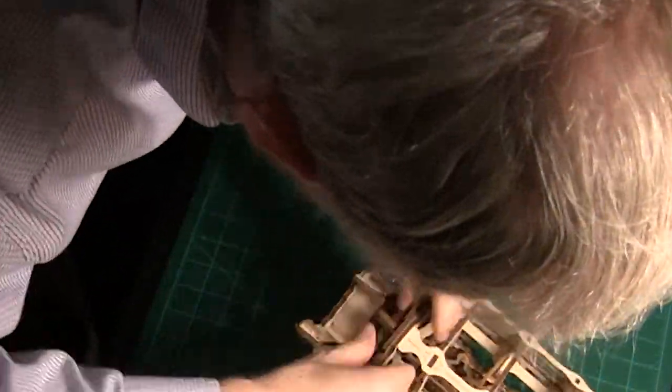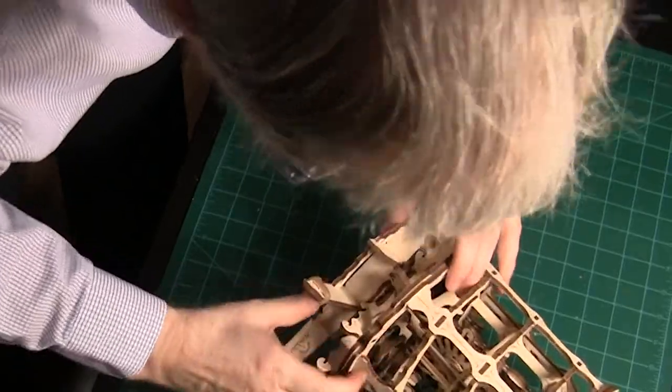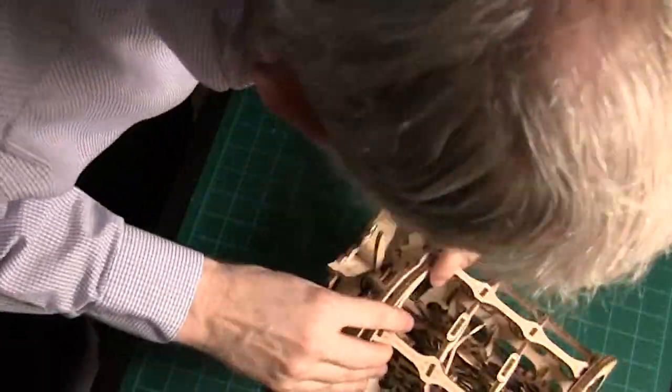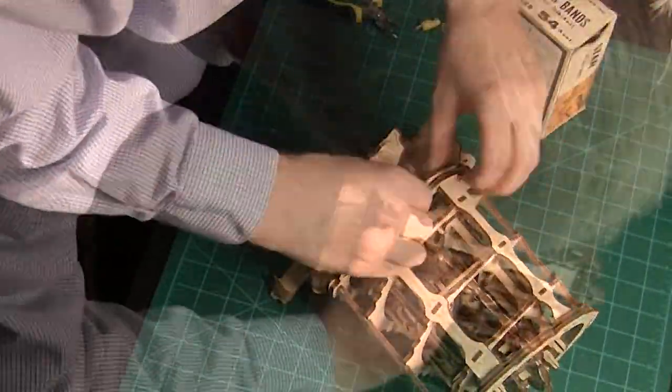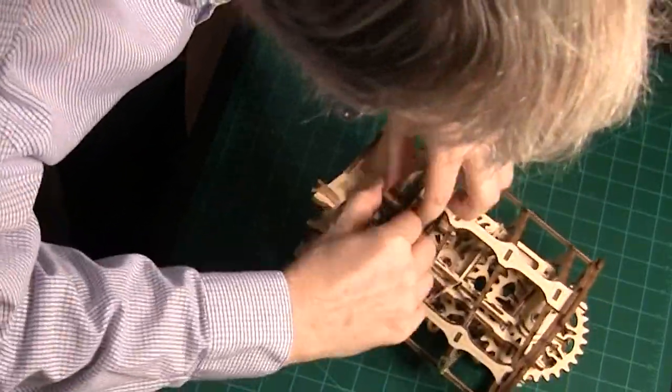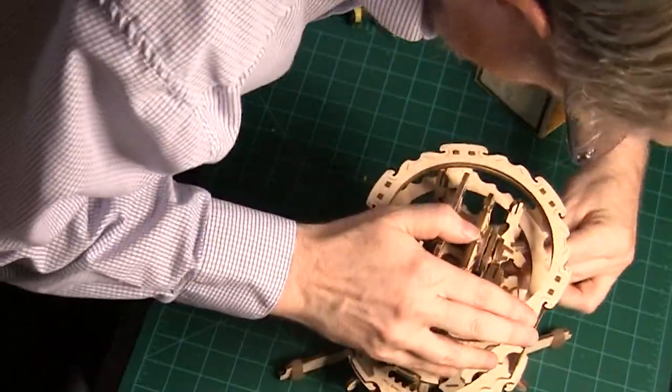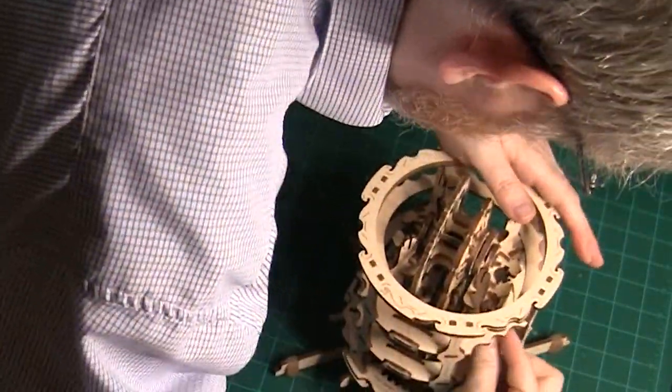Connect the cage and the bottom ring together. Ed's been doing this for over a year and he still forgets where the camera is. Adjust the position of the brace pieces making sure that the cage rotates easily.